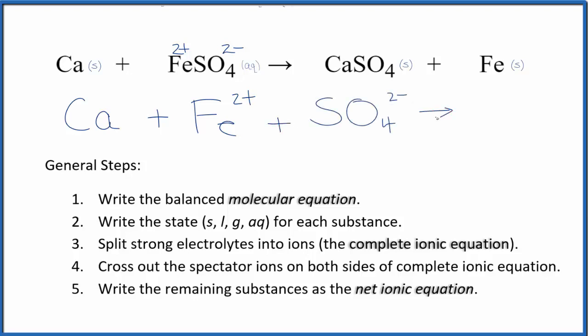And these are the reactants in our net ionic equation. For the products, with net ionic equations, we don't split apart solids. So we're going to keep this as CaSO4. And then again, with the iron, it's just iron. We can't split it apart. So we're going to write Fe.